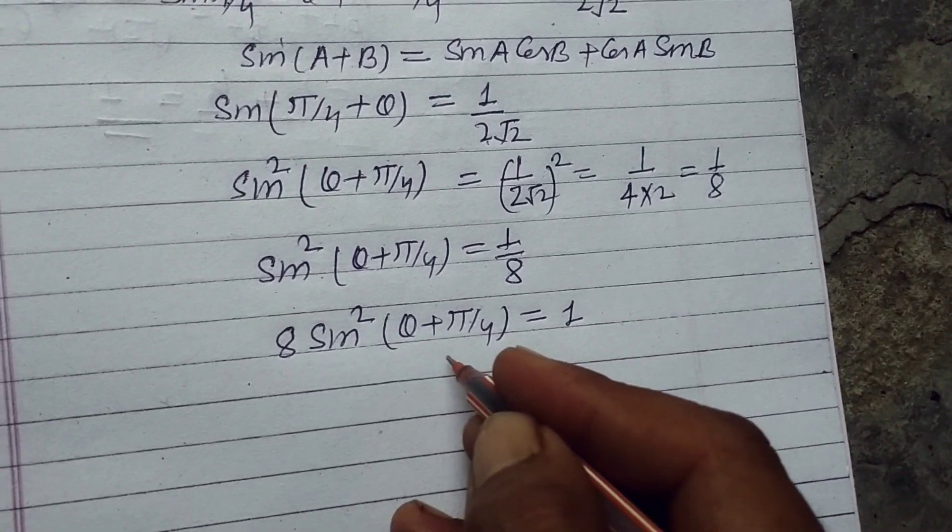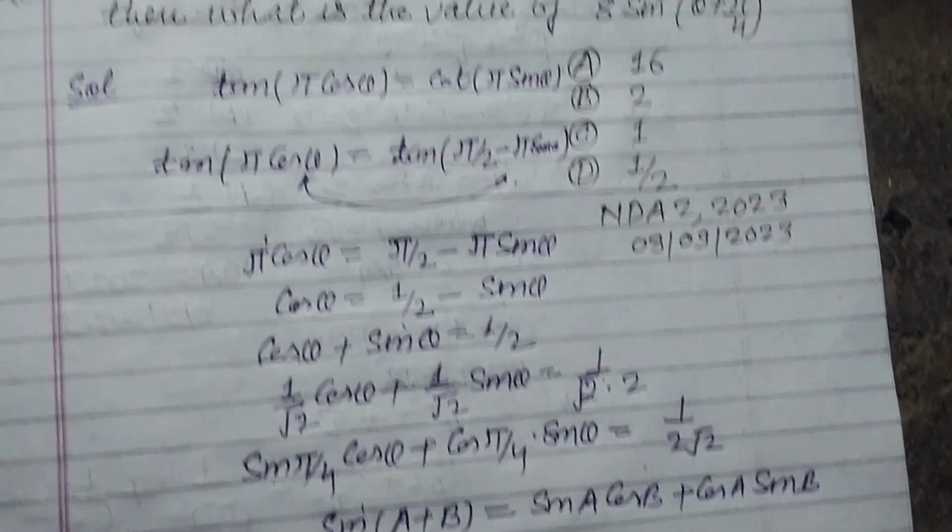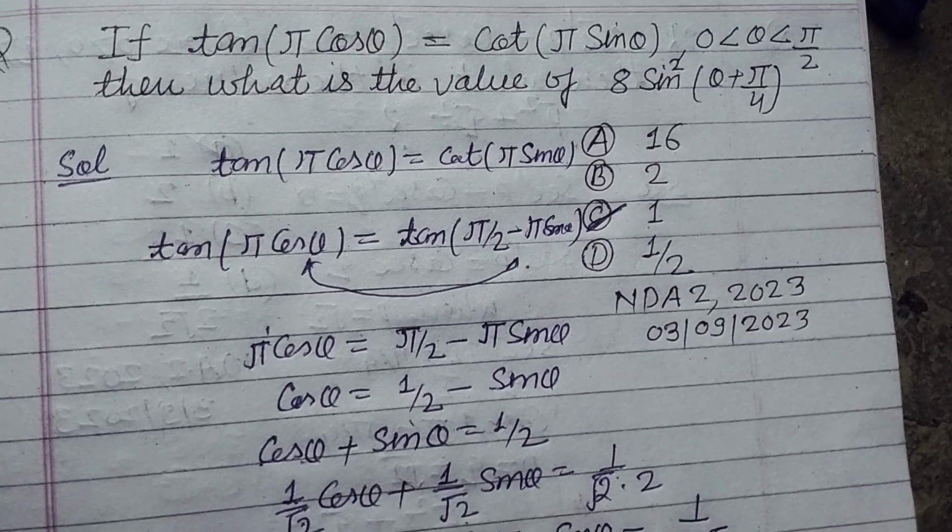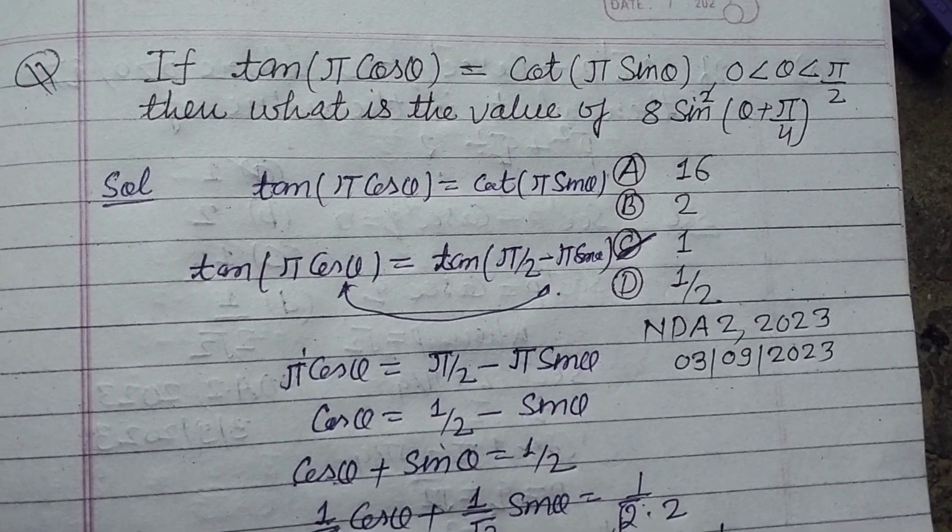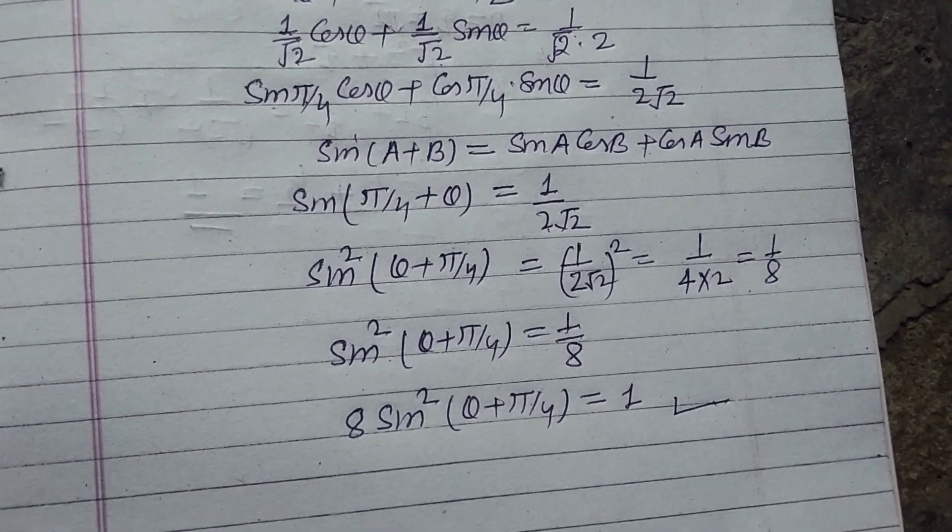So the value of 8 sin²(θ + π/4) is 1, which is found in option C of this question. So student, option C of this question is correct. I hope you got it. Please like the video, subscribe the channel, thanks for watching.